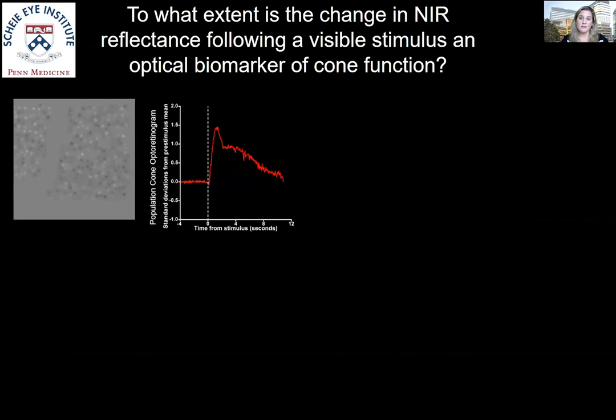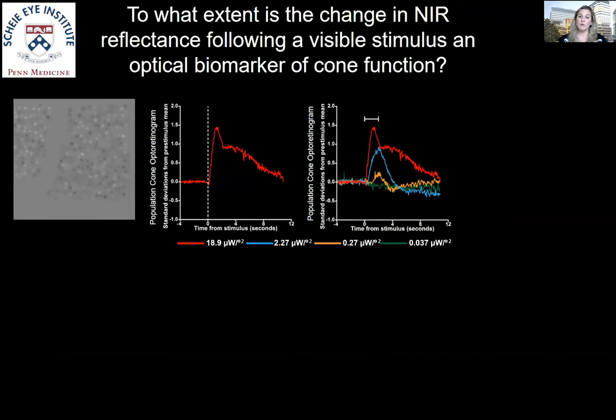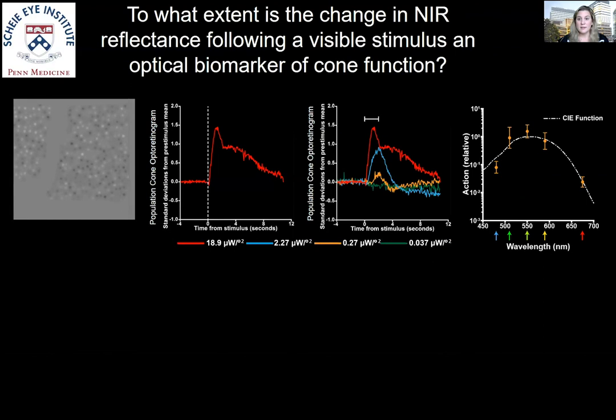We then asked whether this signal follows known properties of the visual system. Testing over four different stimulus irradiances across multiple log units showed that the opto-retinogram signal indeed increases across increasing irradiances. We also looked at varying stimulus wavelengths and found that the action spectrum of the opto-retinogram response mirrors the human photopic luminosity function, the CIE function. We are therefore very confident that the opto-retinogram response we are measuring is related to cone function.